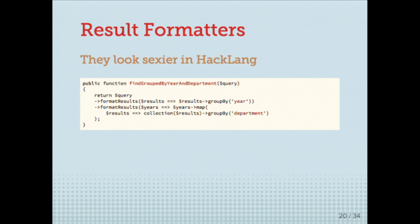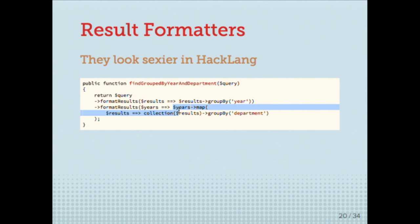The good thing is that if you use HackLang from HHVM it looks even nicer — the pipe operator saves a lot of time. Instead of declaring separate functions you can do it inline. For each result, group by year, and then for each year in the result map them again. You can actually compress the code significantly if you use HackLang. The inline expressions are closures.